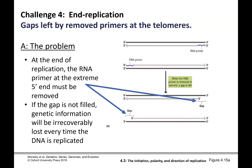Our next challenge is replicating the ends of the chromosomes. As our eukaryotic chromosomes extend and replication bubbles begin to merge, you're left with one end being replicated all the way to the three prime end, and on the other end we are left with a primer.